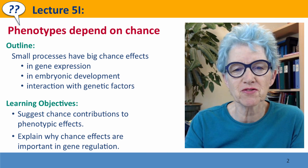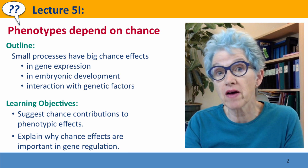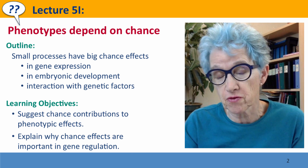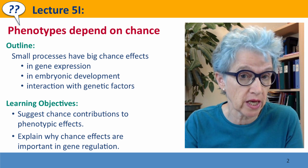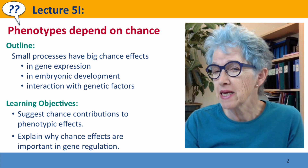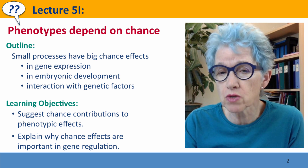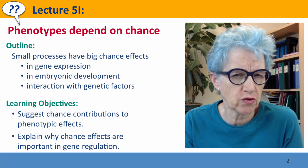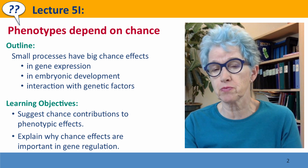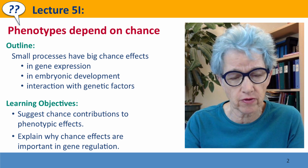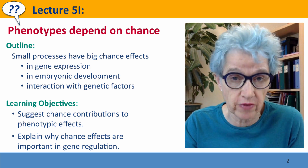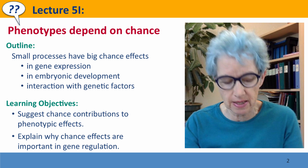Hi, everyone. Welcome back to Useful Genetics. This is Lecture 5i. We're going to talk about the final factor that influences phenotypes, and that is chance. It's important to emphasize chance because it plays big roles, not just for the big chance events that we're aware of, but for very small processes, processes at the molecular level. There are enormous dependencies on chance events, which we're going to illustrate in this lecture.